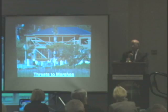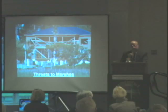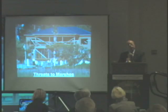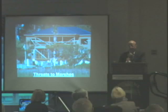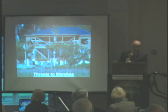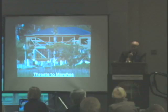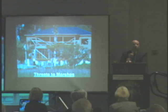Threats to the marshes include construction without maintaining proper buffers between the construction line and the marsh. In Georgia, we had an act passed in the 1970s called the Coastal Marshlands Protection Act, which was considered at the forefront of environmental marsh protection laws at the time. Basically it said that if you're going to construct something in the marsh, you have to demonstrate that there's not going to be any harm and that it's in the public interest.